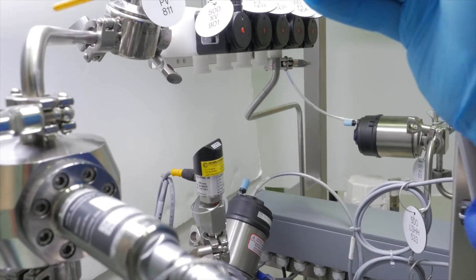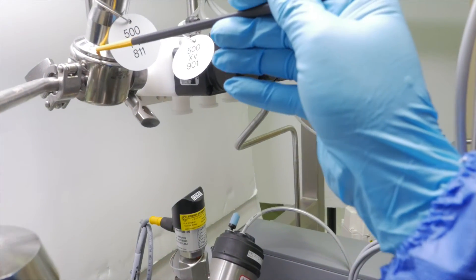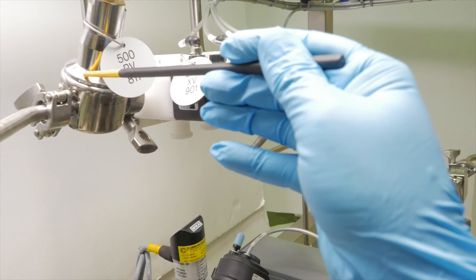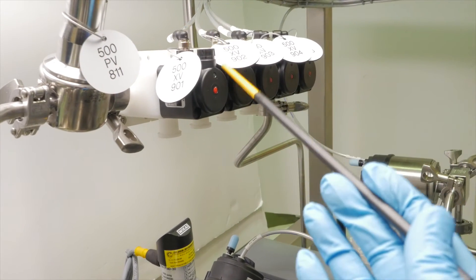Optional column outlet pressure control can be added to the system to maintain constant pressure across the column and prevent off-gassing.